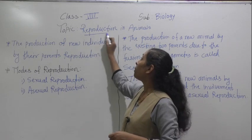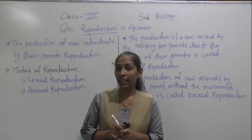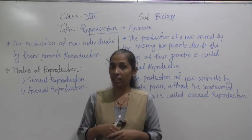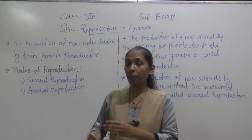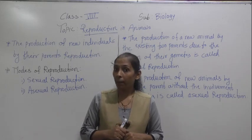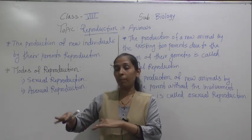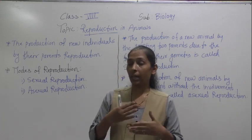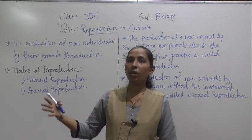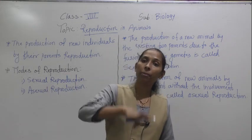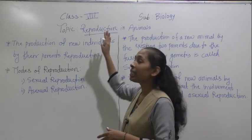Before starting the lesson, let's discuss what is meant by reproduction and why it is necessary. As we know, if there is a birth then there is a death. All living things are growing and after a certain period of time they die. Because of death, the number of certain species decreases. So to fulfill that number, reproduction is important — because of death certain species on the earth decrease, and because of reproduction that species gets fulfilled again.